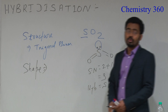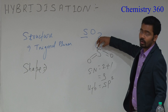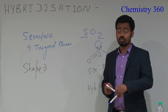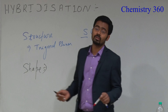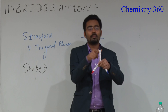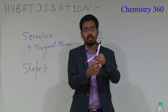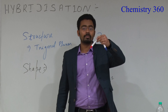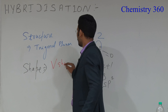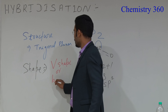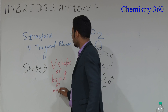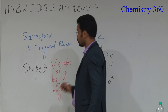For the shape, the lone pair is not considered as a group, so only 2 bond pairs remain. Applying VSEPR theory: the lone pair and bond pairs repel each other — the repulsion between the lone pair and bond pairs is greater, so the bond pairs are pushed closer together. Therefore the shape becomes V-shape, also called bent or angular.